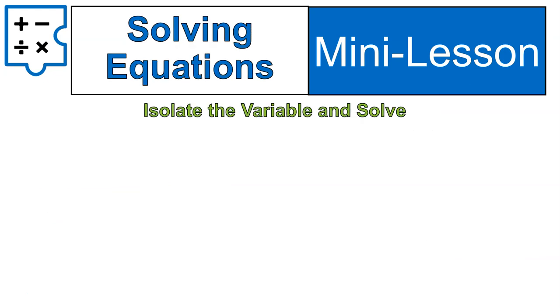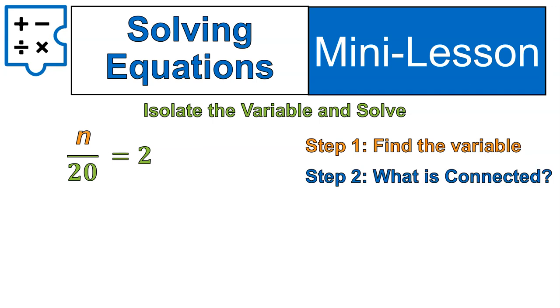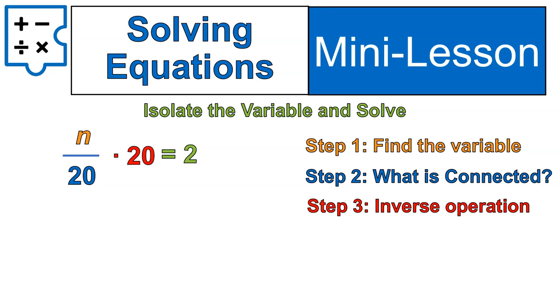Now we're going to solve equations. To do this, you isolate the variable. These steps will look very similar because they're the same steps we do for addition, subtraction, multiplication, and division equations. Step number one, find the variable. We're going to identify our variable as n. Step two, look at what it is connected to. In this case, it's connected to divided by 20. So we're going to do the inverse, or the opposite, of dividing by 20, which means we multiply times 20. We have to do that to both sides of the equation.